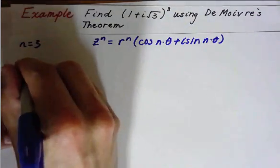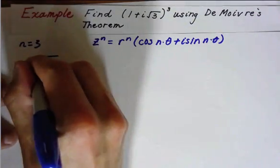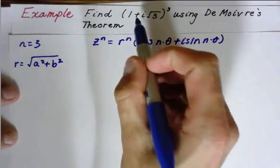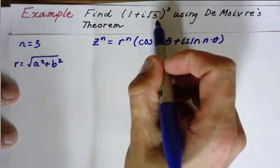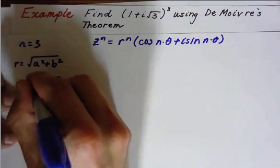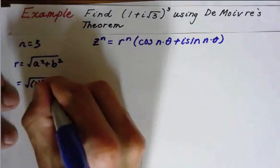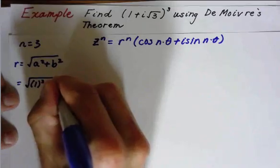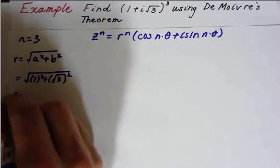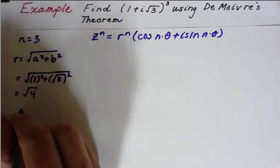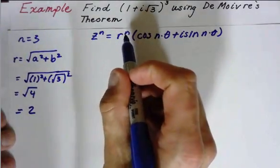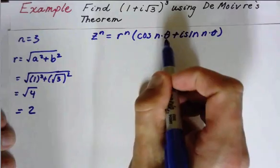r is equal to the square root of a squared plus b squared. Here's our a and here's our b, so by substitution we have √(1² + (√3)²). We simplify that and get √4, which means r is equal to 2. So we've got r, we've got n, now we need theta.